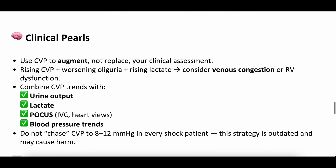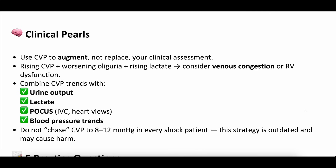Clinical pearls: use CVP to augment, not replace, your clinical assessment. Use it as a single data point amongst many to inform your decisions. A rising CVP combined with rising lactate and worsening oliguria might suggest venous congestion or RV dysfunction — consider diuresing those patients. Combine CVP with things like ultrasound, blood pressure, lactate, urine output, and organ perfusion. Don't chase CVPs in every single patient — that was the old adage where you'd give fluid or diurese to meet a certain CVP number, and that's outdated and may cause harm. There's no magic CVP number. Use it as a data point within the larger clinical context and trend it over time.